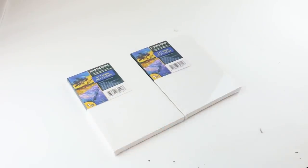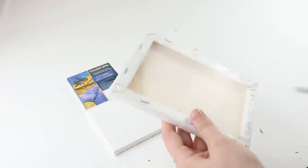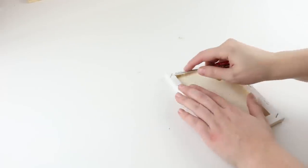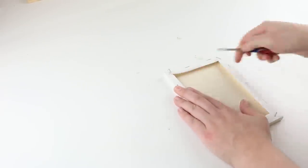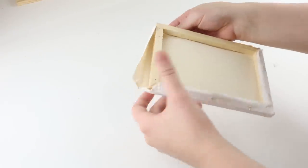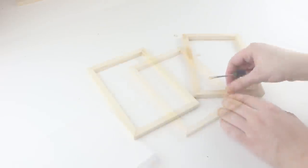To make the smaller lantern, we're going to grab two 5x7 canvases from Dollar Tree. The easiest way for me to get this off was to grab a flathead screwdriver and pry up the staples and then grab pliers and rip them out. Then go ahead and take the canvas off because all you'll need is the canvas frame.